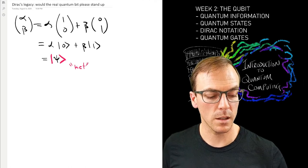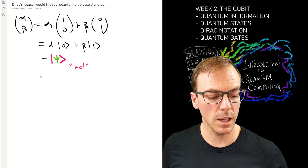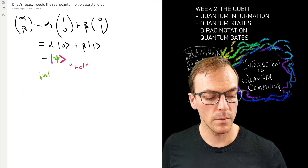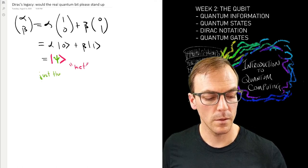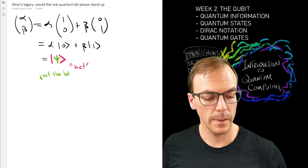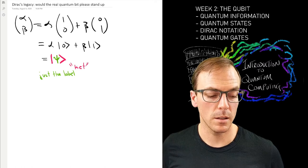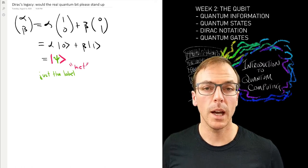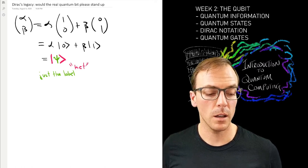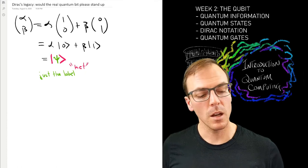This outside part here is called the ket. It never appears without anything inside, but the important thing is that the thing on the inside is just the label.